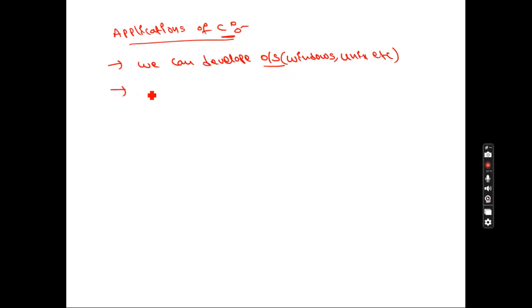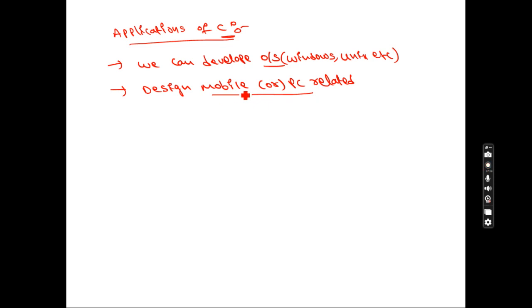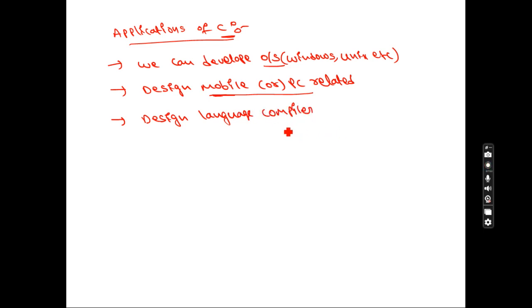If you learn C language, you can also design mobile or PC-related games. For example, in olden days we were using Nokia keypad phones — the snake game in those phones was developed with the help of C language. That is one example. Also, if you learn C language, you can design language compilers. You know the meaning of a compiler — converting user instructions into machine-understandable language in a single step.